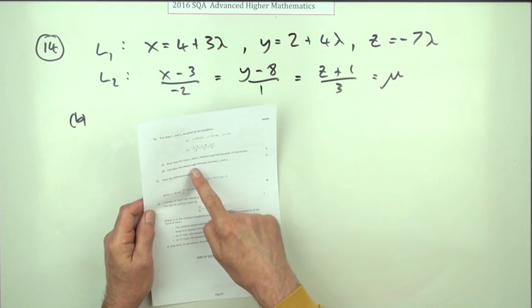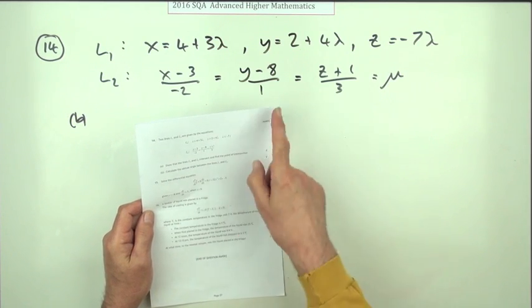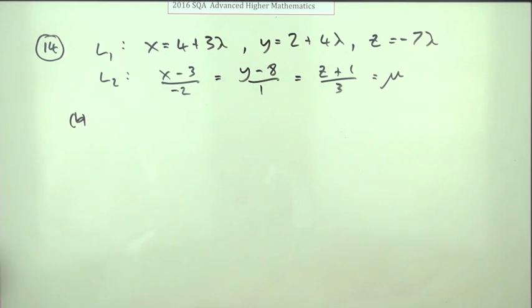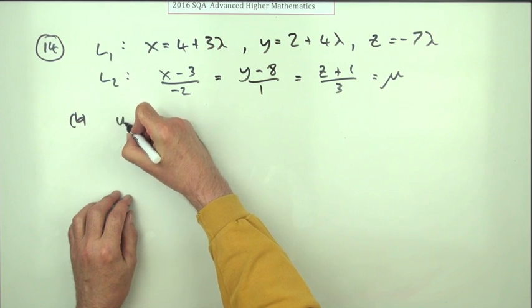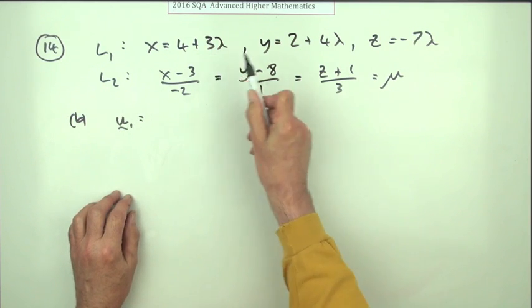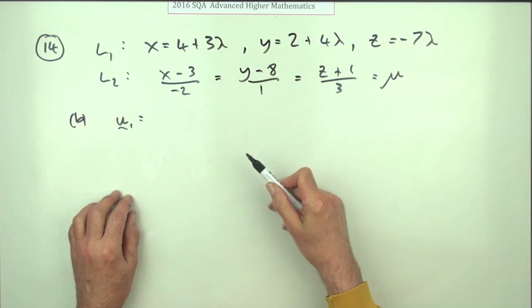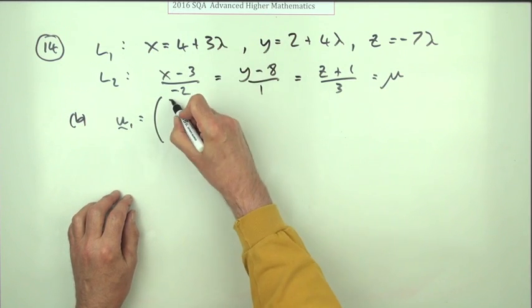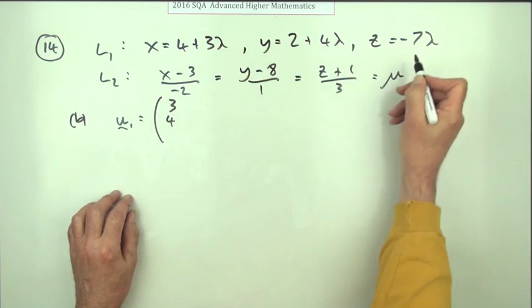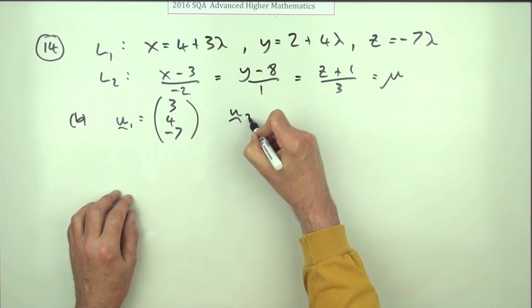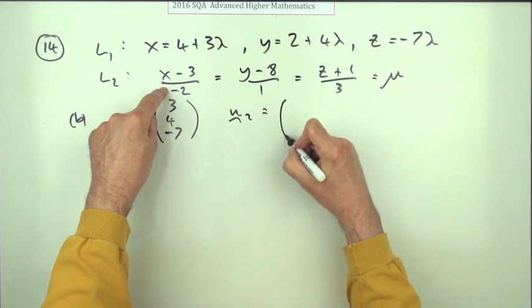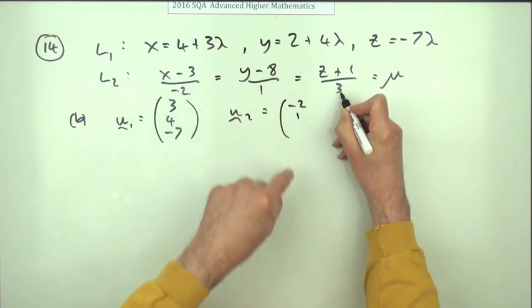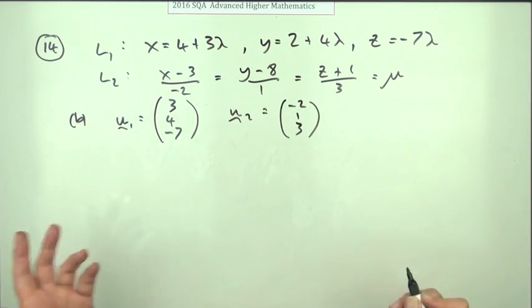And part b. Calculate the obtuse angle between the lines L1 and L2 for four marks. Well that's just higher isn't it. Because all you need to be able to do is extract the point vectors. So for line 1 its point vector is given by the multiple of the parameter. So it must be 3, 4, and negative 7. The point vector of the second line is negative 2, 1, 3. And then it's just the same as before.